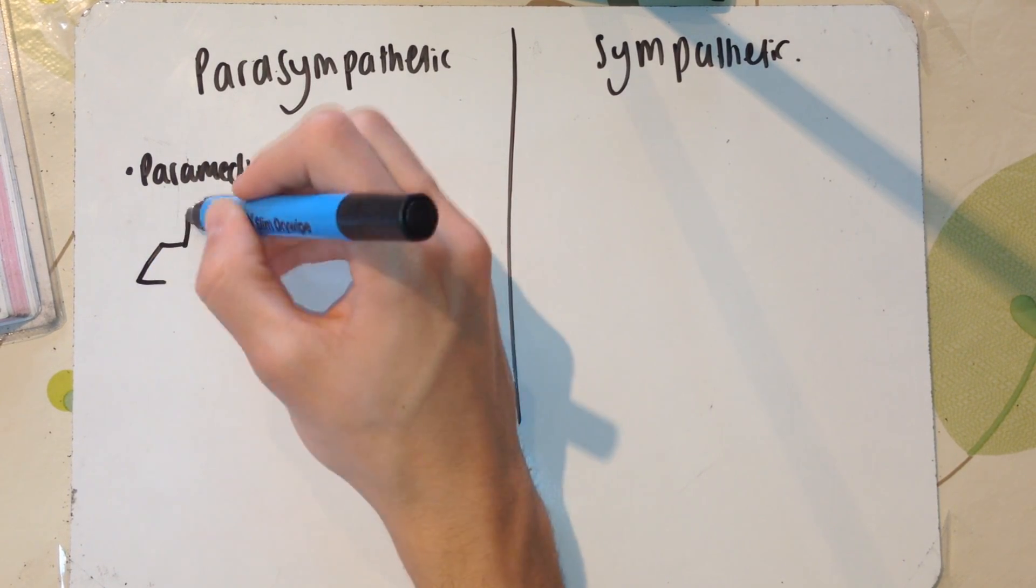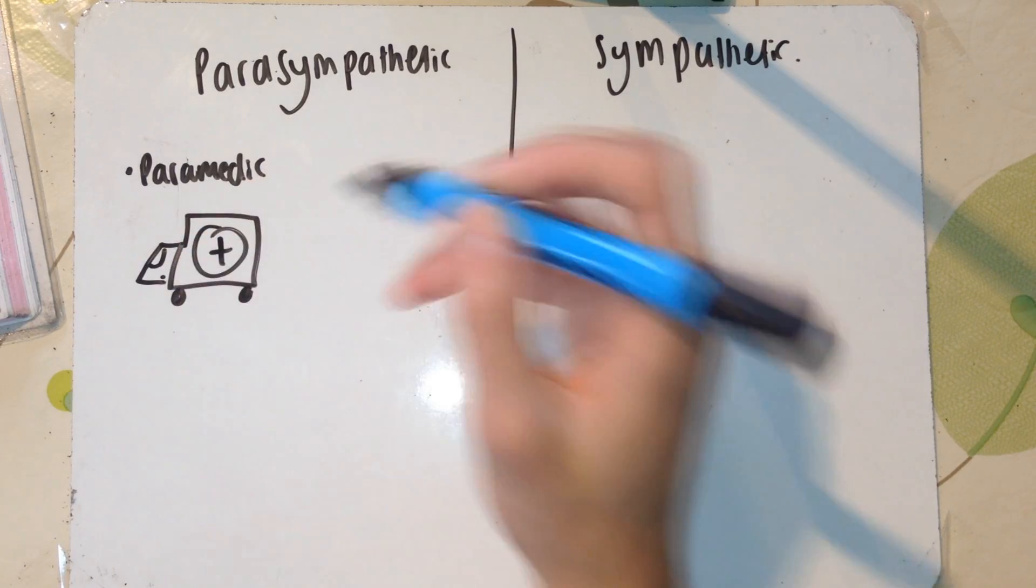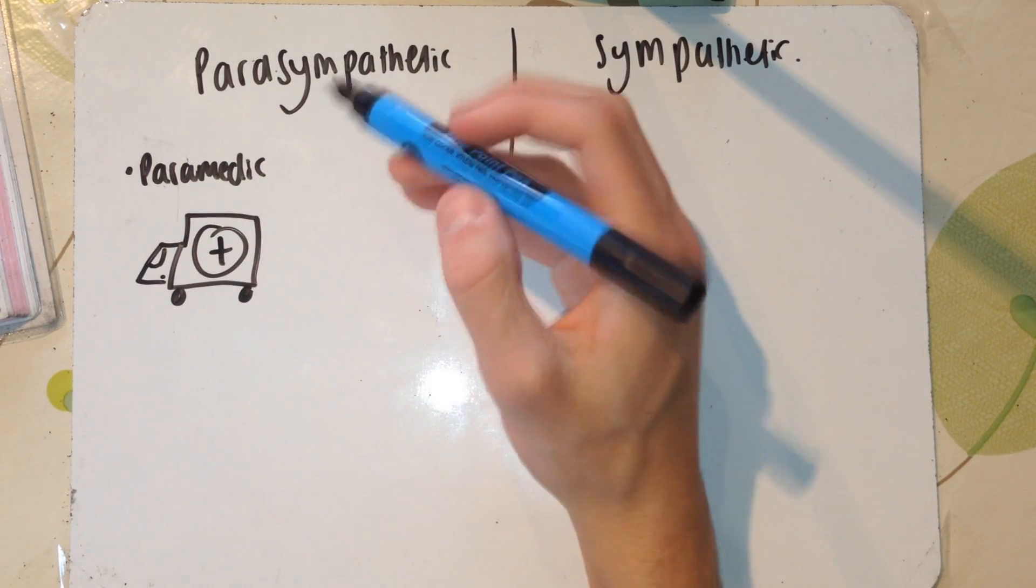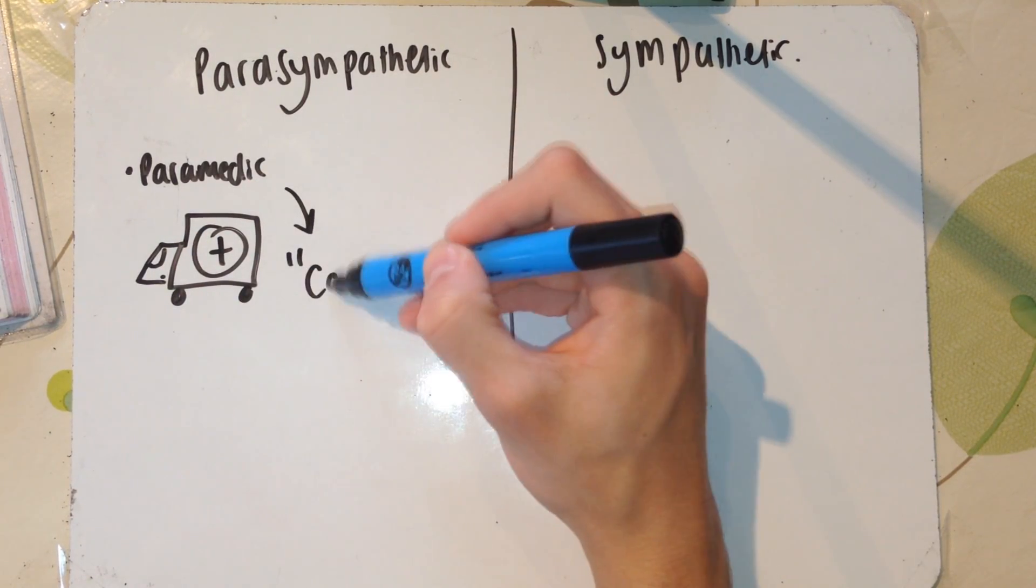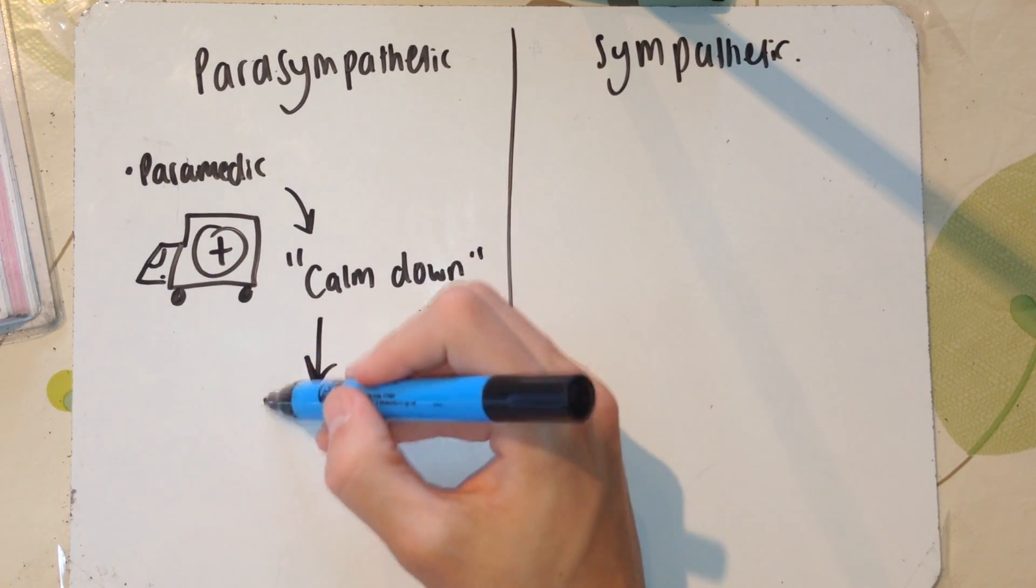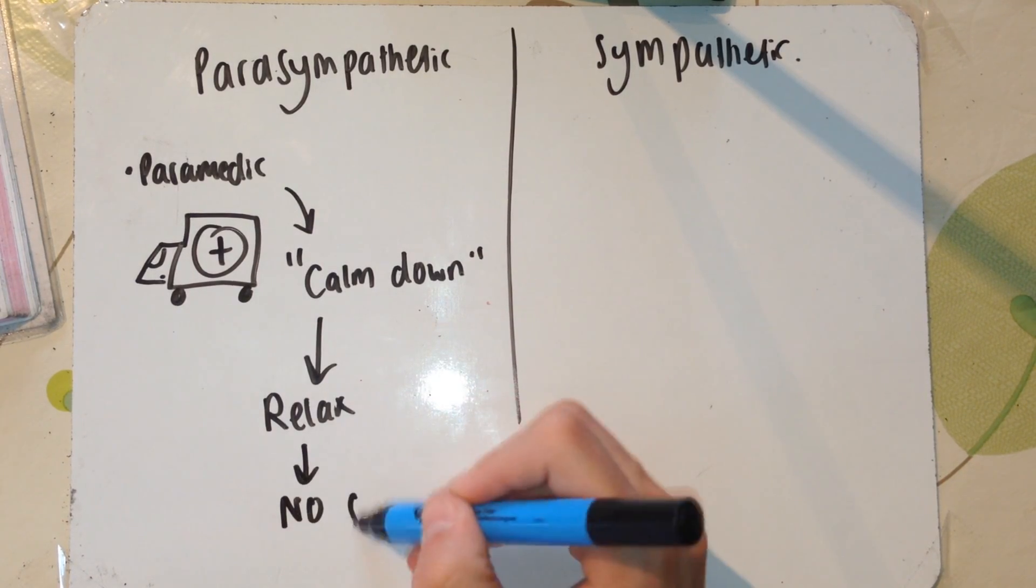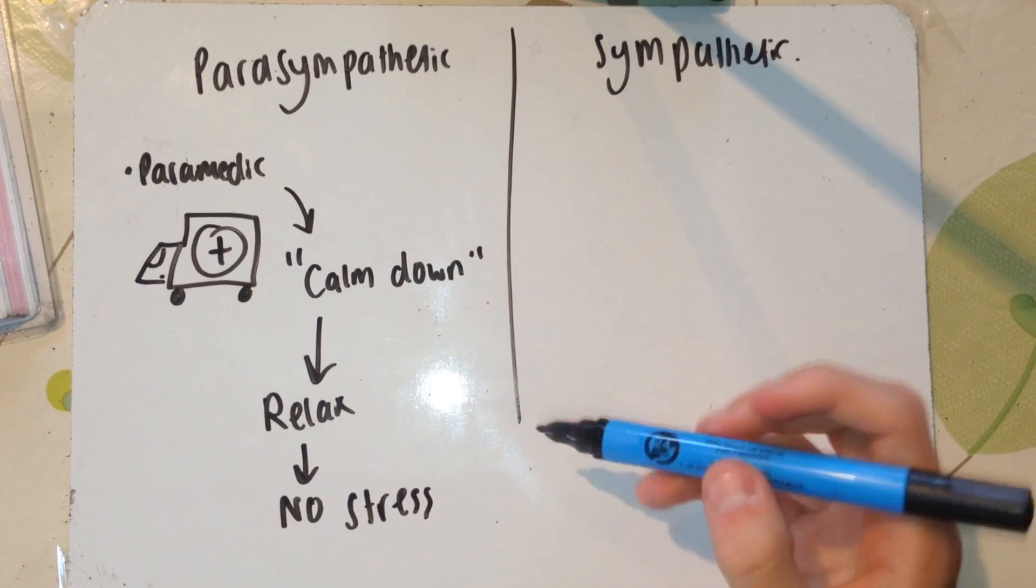Obviously if there's been an accident, paramedics are going to come on scene and say calm down, chill out, reduce your heart rate. Therefore that means the effects include a decreased heart rate, decreased ventilation rate. That is what your parasympathetic nervous system is in times of relaxation, not in stress.